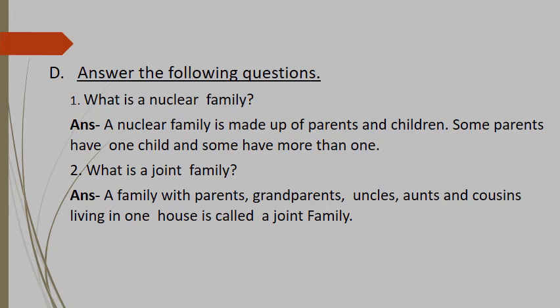Question D: Answer the following questions. Number one: What is a nuclear family? Answer: A nuclear family is made up of parents and children. Some parents have only one child and some have more than one. Number two: What is a joint family? Answer: A family with parents, grandparents, uncles, aunts and cousins living in one house is called a joint family.